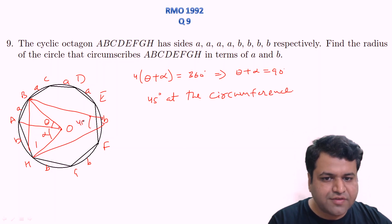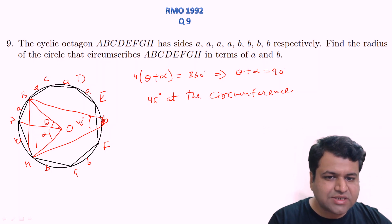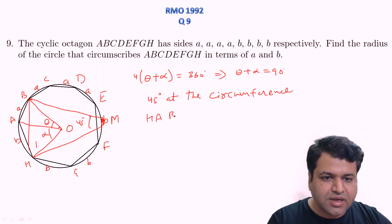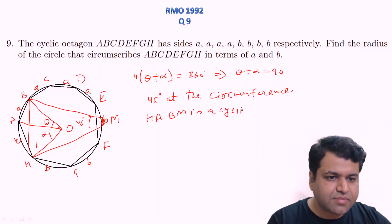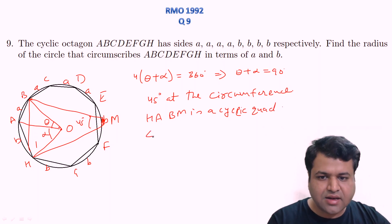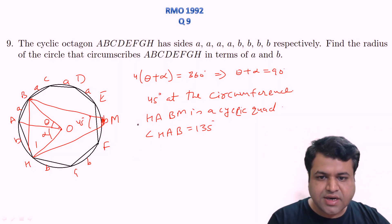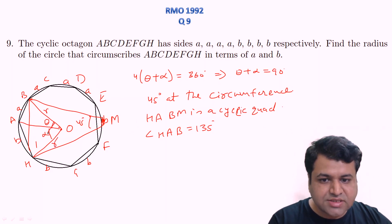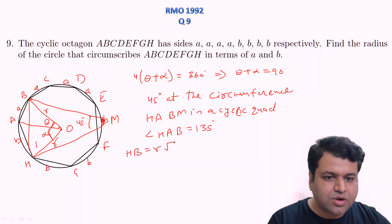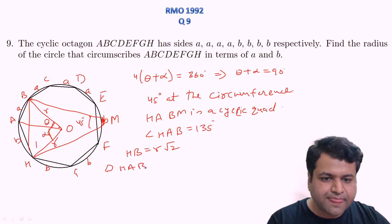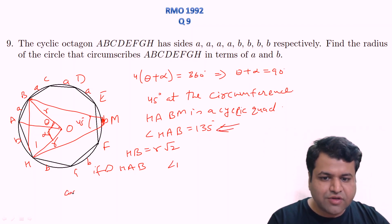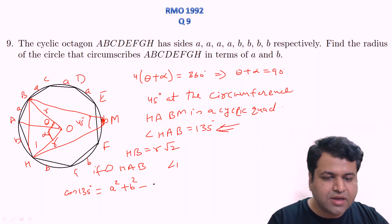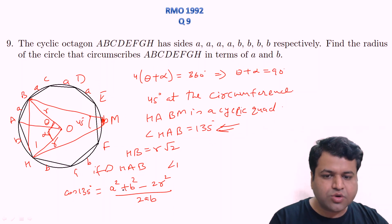Since HB subtends 45° at the circumference, consider point A on the circle. Quadrilateral HABM (where M is another point on the circumference) is cyclic, so angle HAB = 180° - 45° = 135°. In triangle HAB, we have HA = b, AB = a, and angle HAB = 135°. Applying the cosine rule: cos(135°) = (a² + b² - HB²) / (2ab).